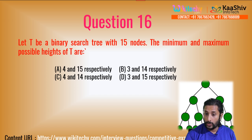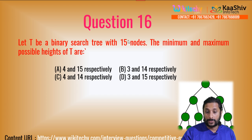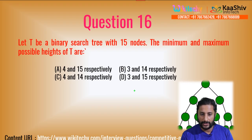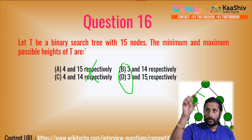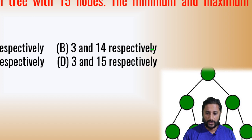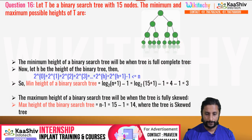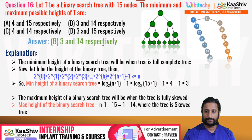Question 16: Let T be a binary search tree with 15 nodes. What are the minimum and maximum possible heights of T? The minimum height of a balanced BST with 15 nodes is ⌊log₂(15)⌋ = 3. The maximum height occurs when the tree is completely skewed (like a linked list): since the root is one node, the remaining 14 nodes form a chain, giving maximum height 14. The minimum and maximum possible heights are 3 and 14.